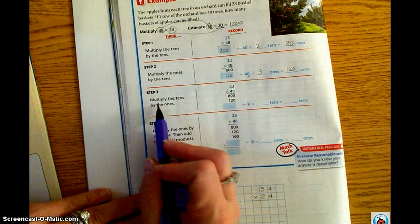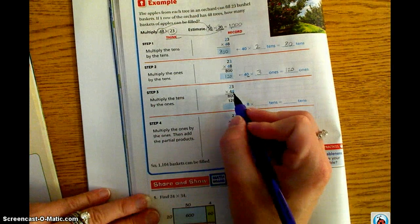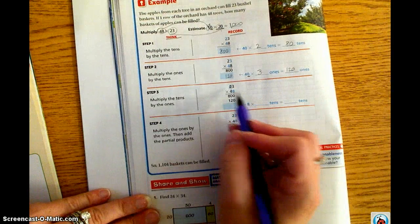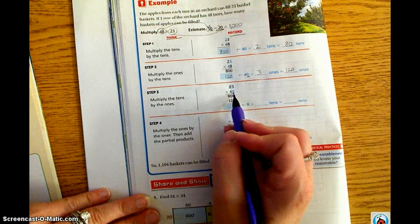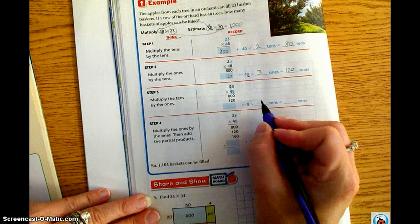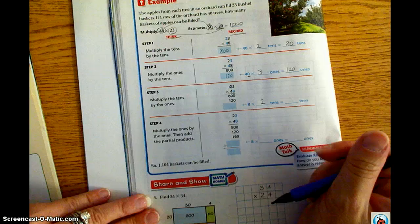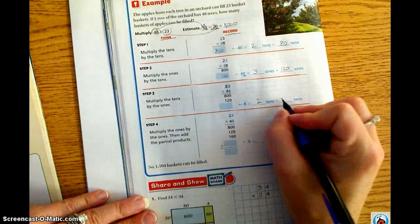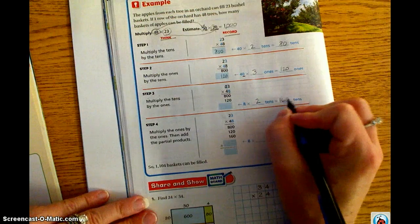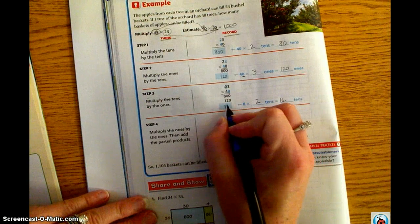Step 3. Multiply the tens by the ones. Tens by the ones. So, 2 tens times 8 ones. So we have 8 times 2 tens. We know that 2 times 8 is 16. But it's a 10, so we need that 0. So this is 160.